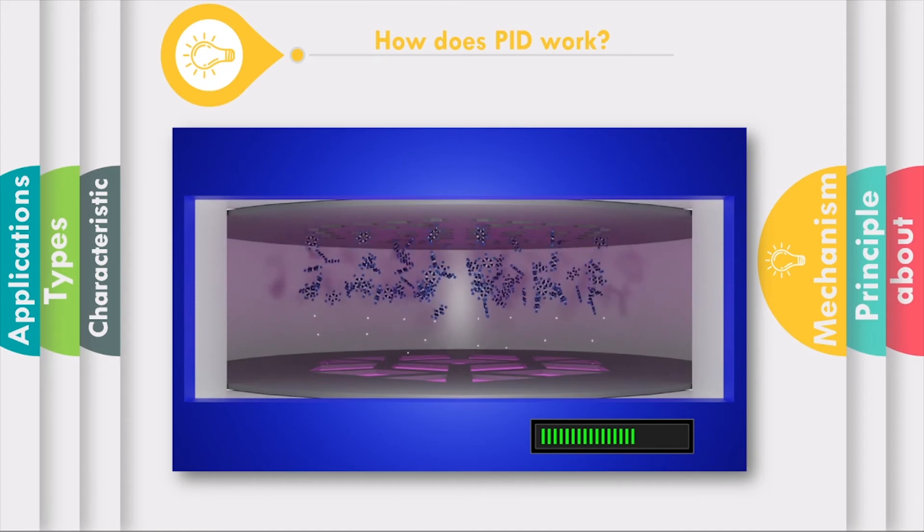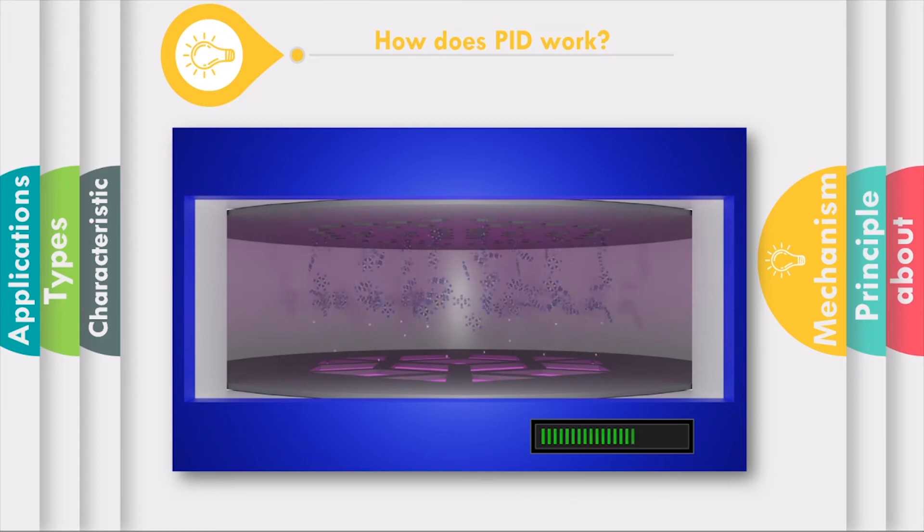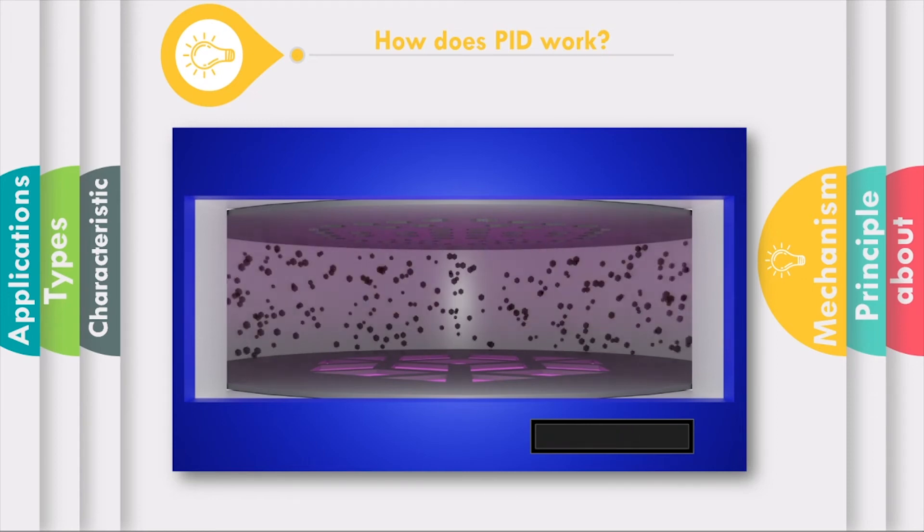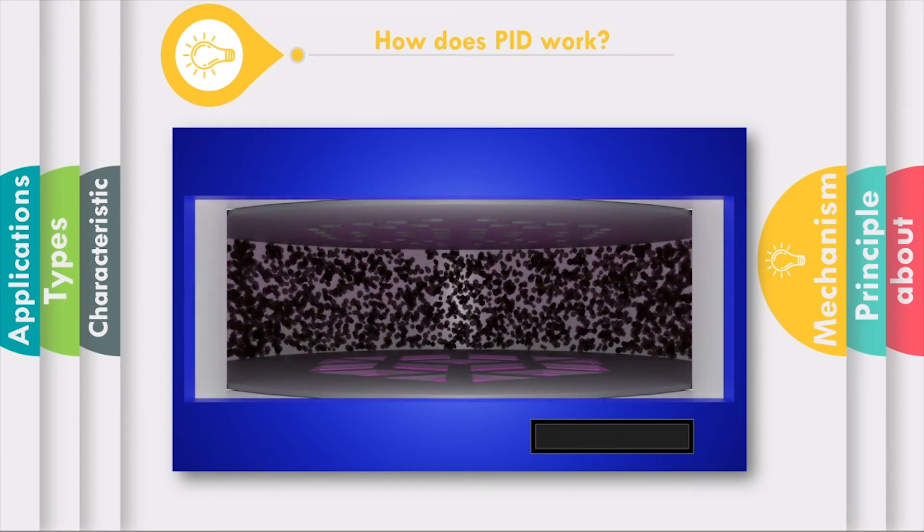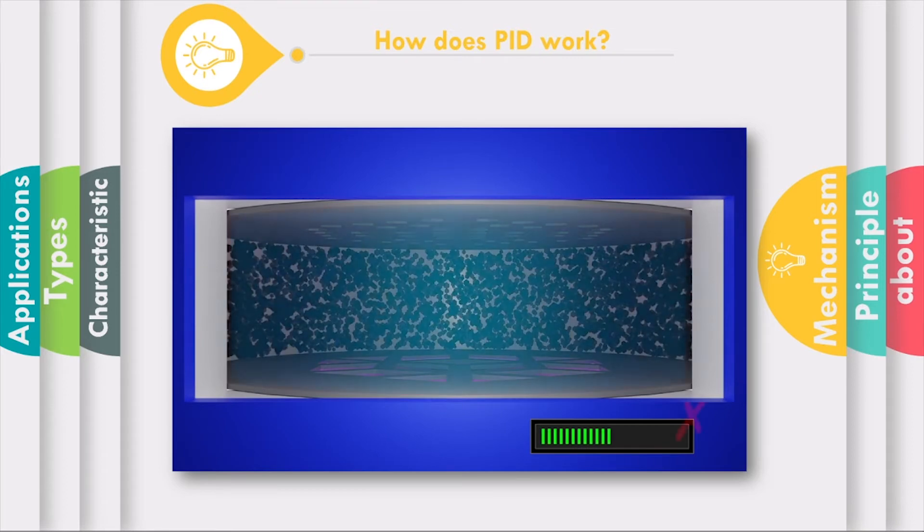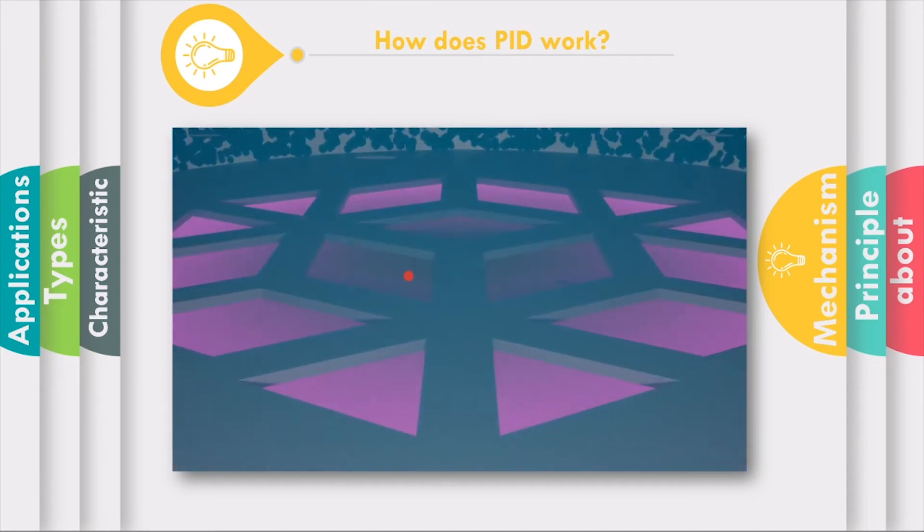Unfortunately, standard photo ionization sensors have issues. If the sensor chamber becomes contaminated with airborne dirt, ambient humidity can moisten the contamination, creating a conductive path between the electrodes. This conductive path then causes an artificial signal that varies with humidity. Airborne dirt can also coat the lamp window, which in turn reduces sensitivity.